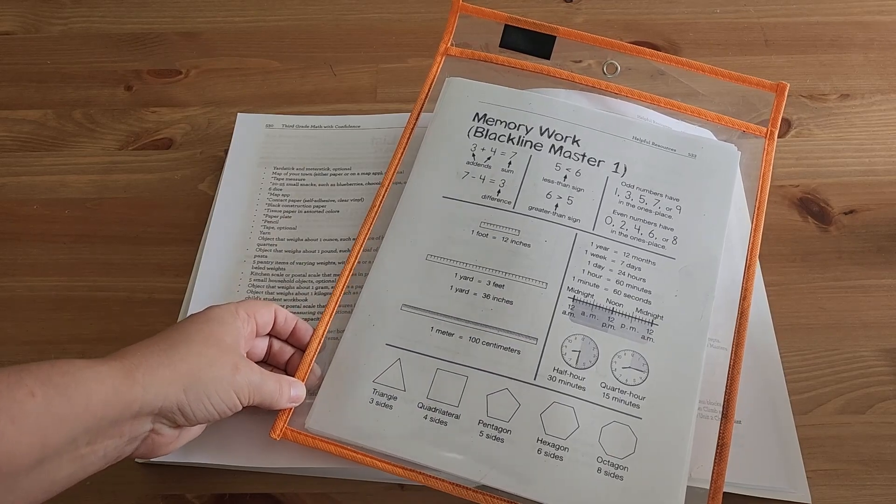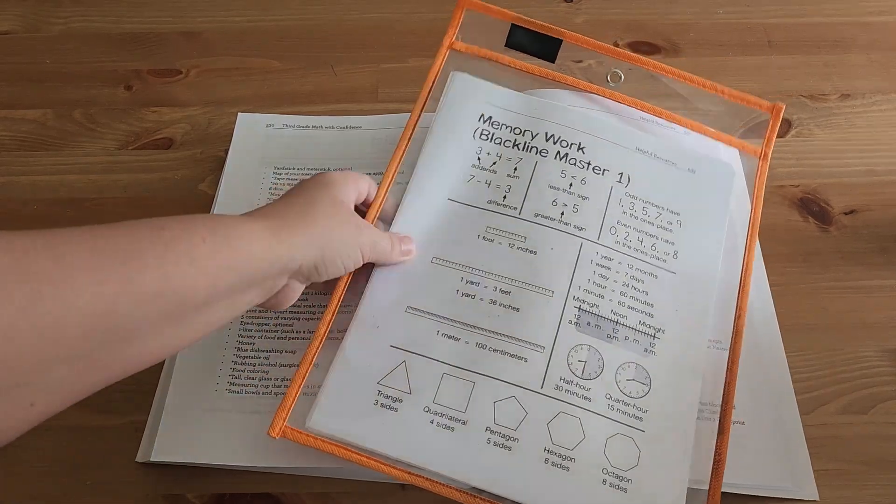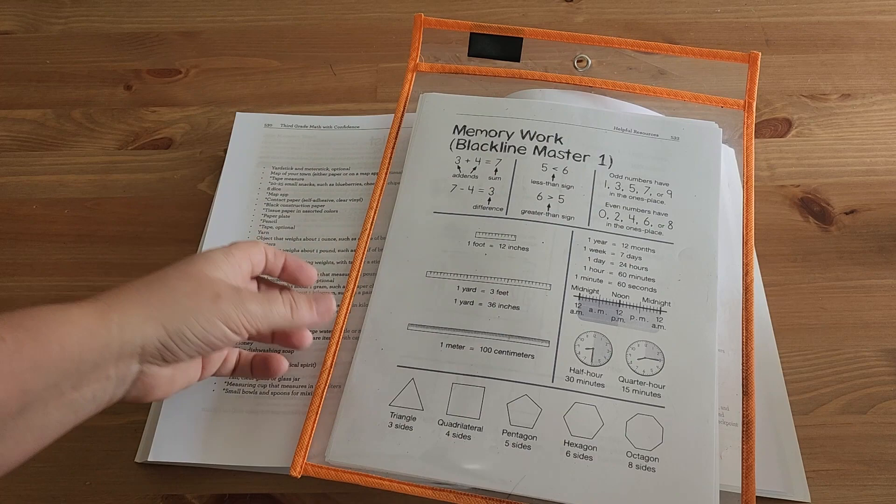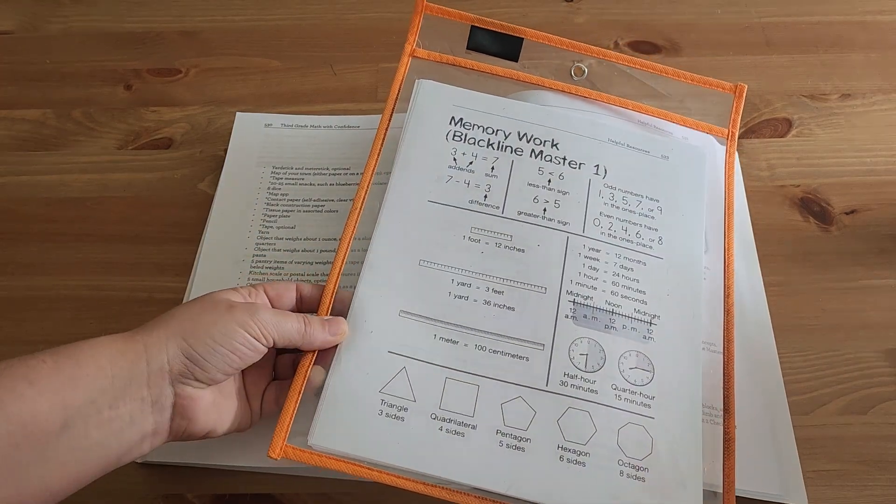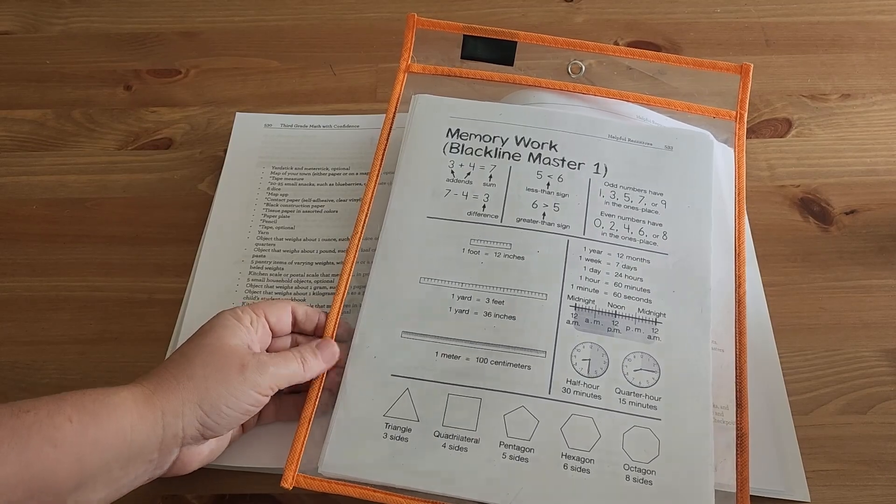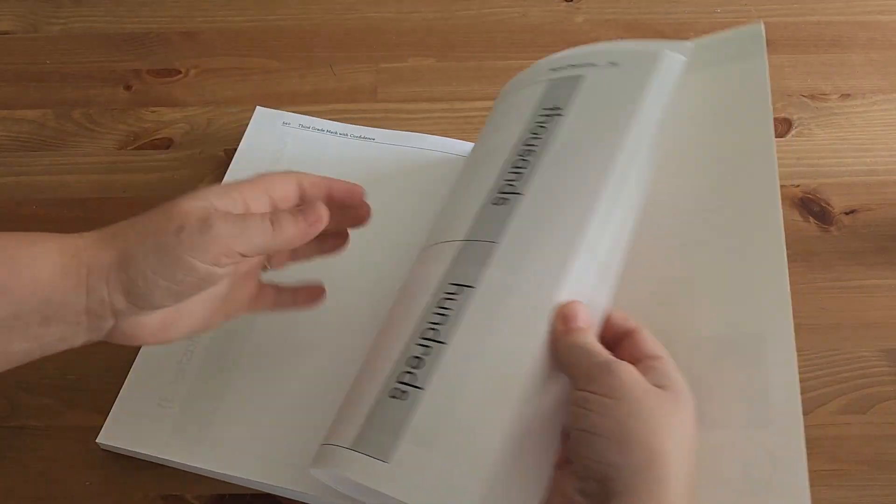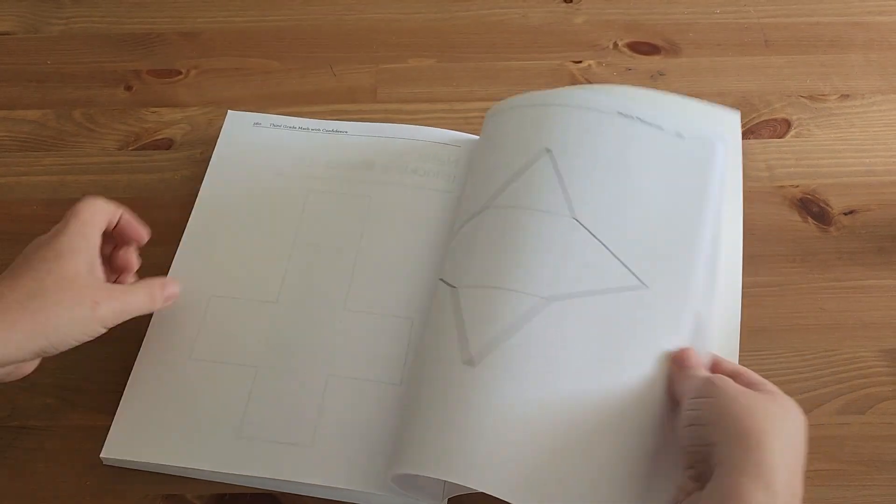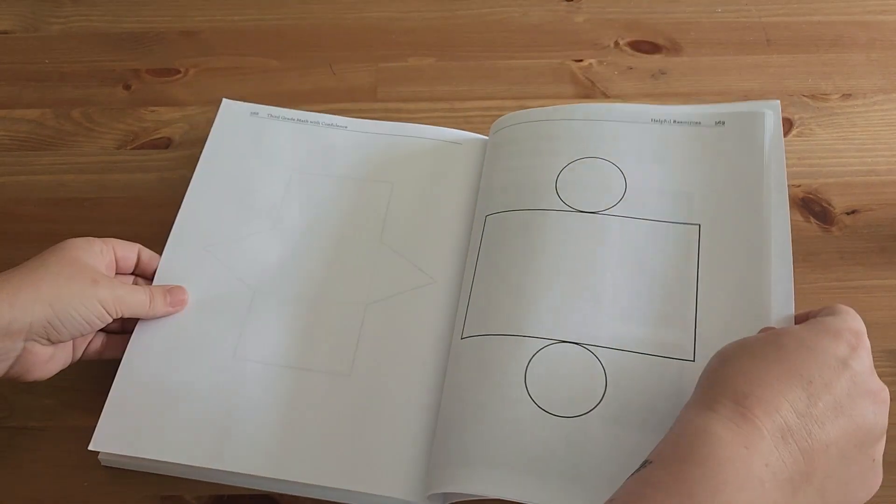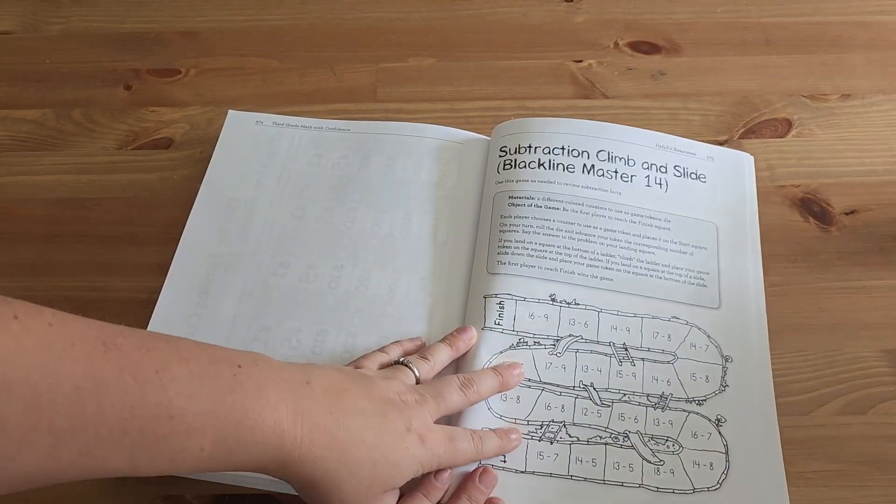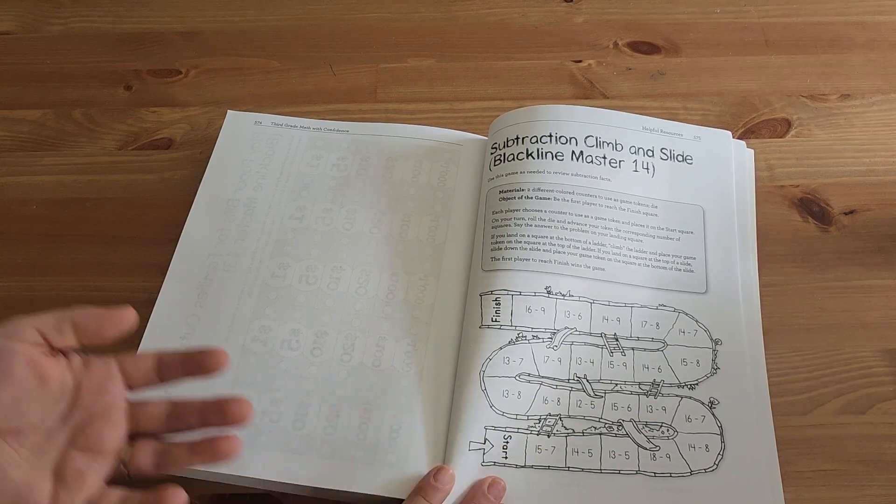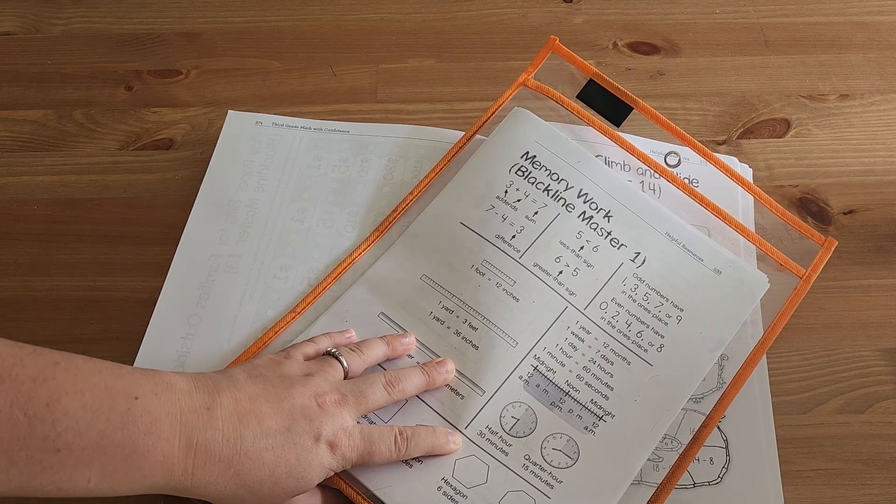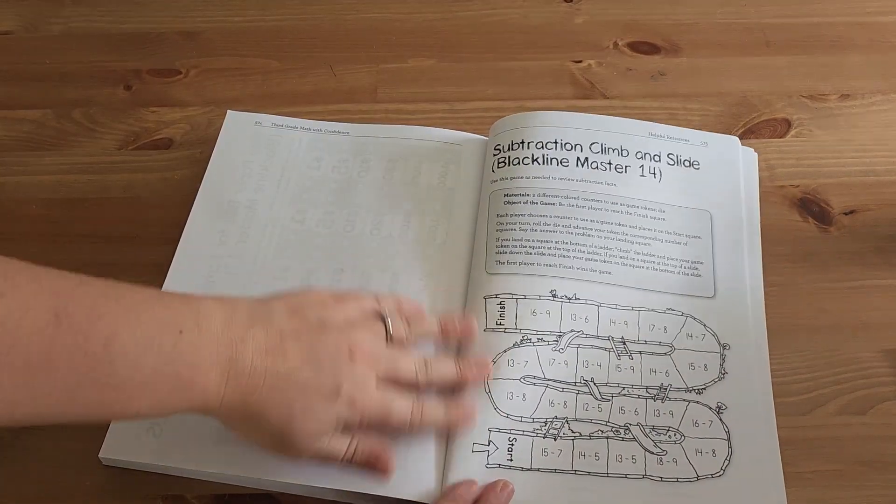This is what we have found works best for us. We don't have a separate binder with all of these pages and things like that. We can easily just go in, find the one that we need, put it in the front, we can write and use dry erase markers, and then wipe it off and move on to the next lesson. So just to do a little bit of flip through, you can see some of the black line masters. And then see, this is for some of the games. And so this is really nice. And this is why we have them in here because we can mark on here, do whatever, and it won't ruin the game board.